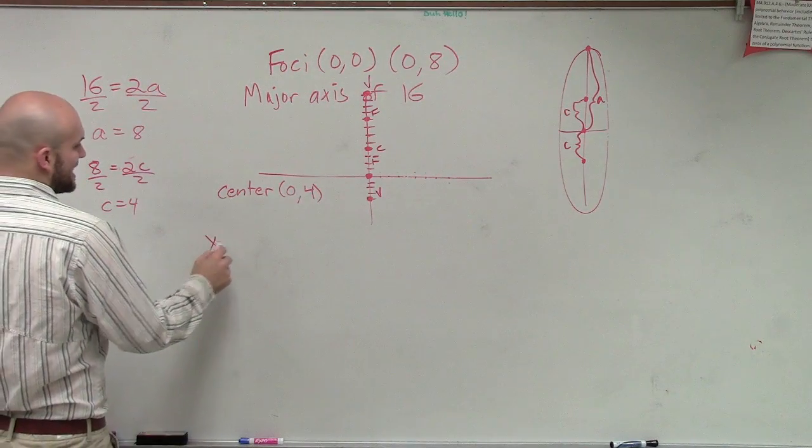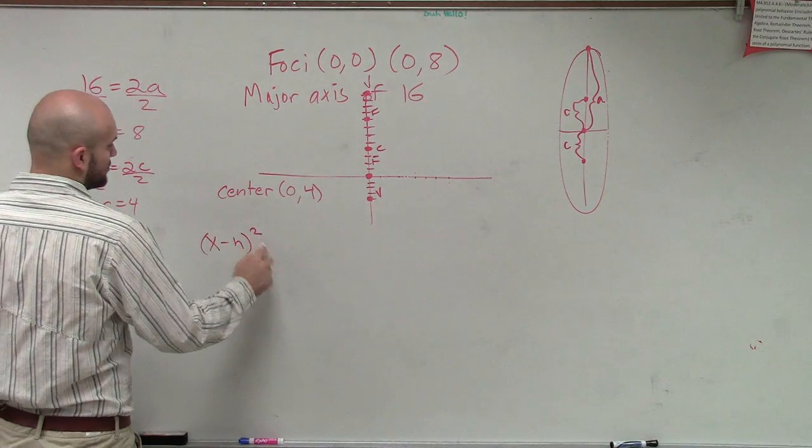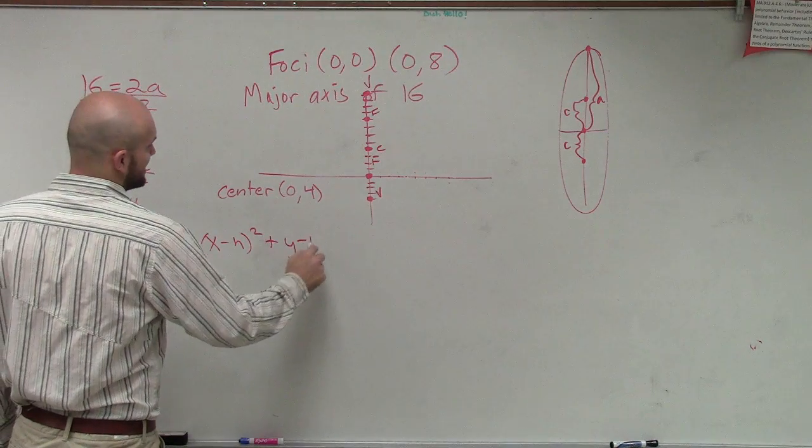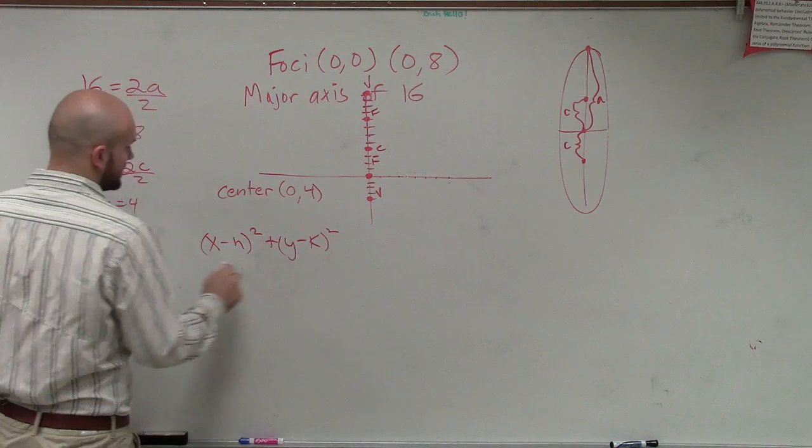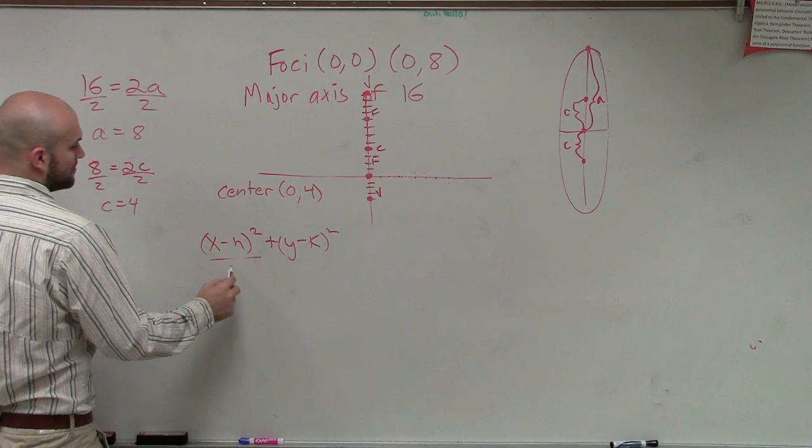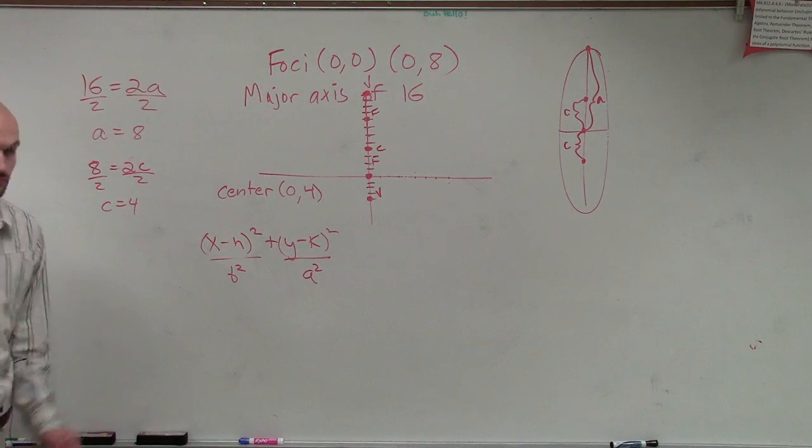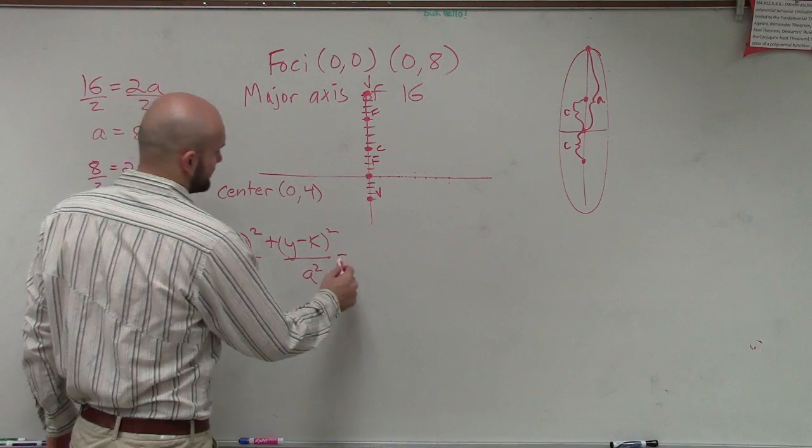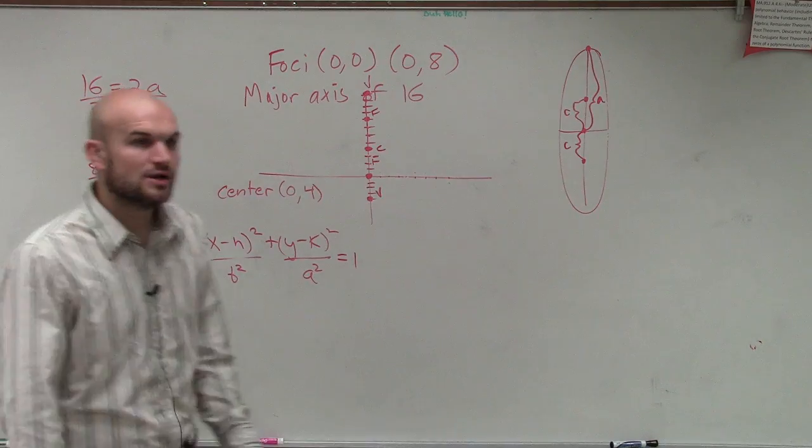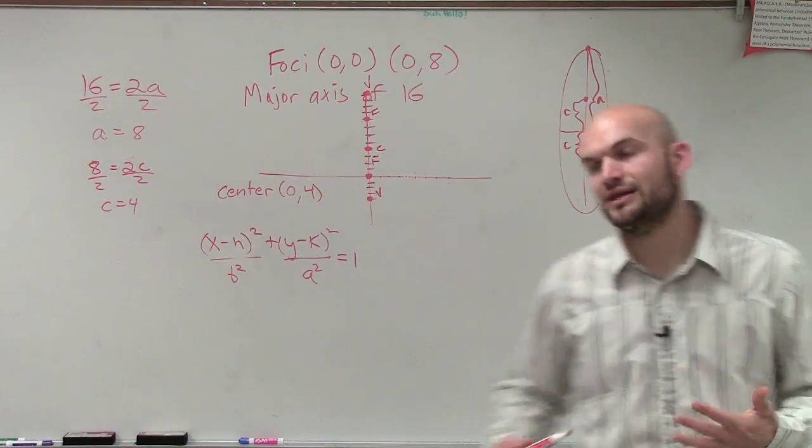So, we know that the formula we're going to use is (X minus H) squared over B squared plus (Y minus K) squared over A squared equals 1. Right? So, what we're going to do is we're now going to plug in that information.